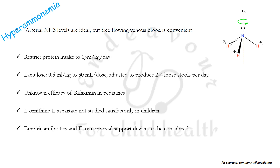Management of hyperammonemia comprises of restricting protein intake to 1 gram per kg per day. Lactulose is to be used in a dose of 0.5 mL per kg to a maximum of 30 mL per dose, adjusted to produce 2 to 4 loose stools per day. The mechanism is that an acidic intraluminal environment favors conversion of ammonia produced by the gut to ammonium ion, thereby decreasing intestinal absorption of ammonia.